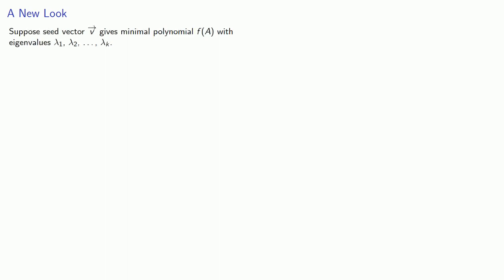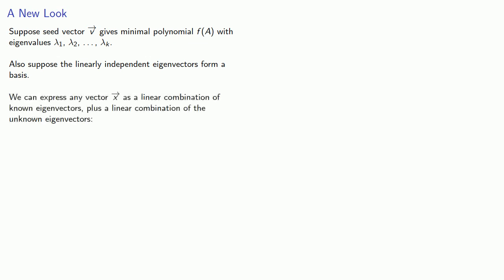Suppose our seed vector v gives us a minimal polynomial f with eigenvalues lambda 1, lambda 2, and so on up to lambda k. Also suppose the linearly independent eigenvectors form a basis. Now we can express any vector x as a linear combination of the known eigenvectors plus a linear combination of the unknown eigenvectors.